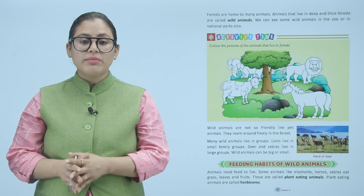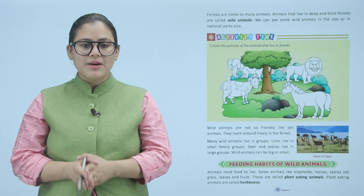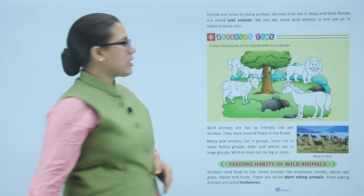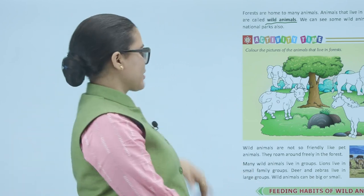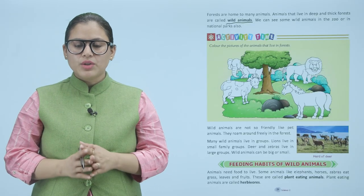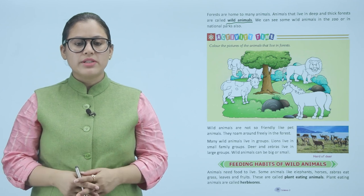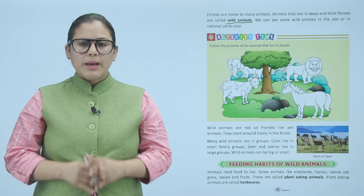Forests are home to many animals. Animals that live in deep and thick forests are called wild animals. We can see some wild animals in the zoo or in national parks also. Wild animals are not so friendly like pet animals — they roam around freely in the forest. Many wild animals live in groups: lions live in small family groups, deer and zebras live in large groups. Wild animals can be big or small.